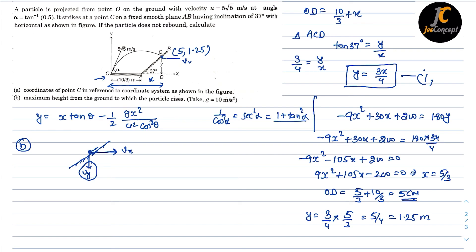The velocity vx makes an angle of 37° with the incline. So the component vx·cos37° is the component that helps the particle rise along the incline.